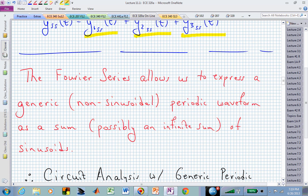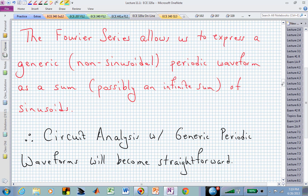The Fourier series allows us to express a generic non-sinusoidal periodic waveform as a sum. That sum might be infinitely large, but it's going to be a sum of sinusoids. And once we know that we have a collection of sinusoids at the input of the system, then our circuit analysis is going to be pretty straightforward for a generic periodic waveform, where that generic periodic waveform is simply a combination of sines and cosines.